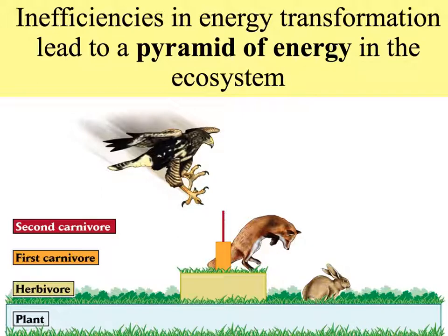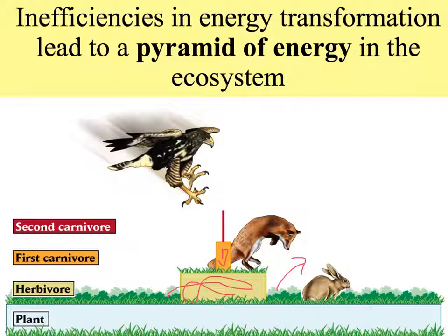The biggest level of the pyramid is at the base, the plant level. Then the second level — the primary consumers, which are herbivores. This is because there is a large amount of energy lost at every step when plant biomass is eaten by herbivores; an awful lot of this doesn't go to make new herbivore biomass but is used for energy and metabolism.